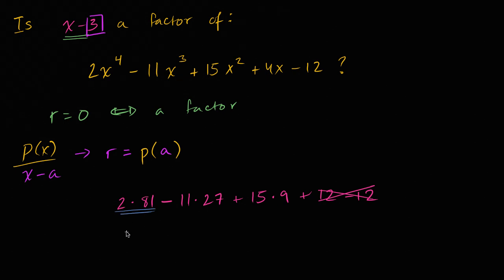2 times 81 is 162. Now let's think about what 27 times 11 is. 27 times 10 is going to be 270. 270 plus another 27 is minus 297.